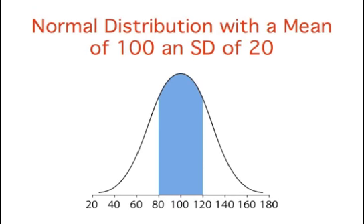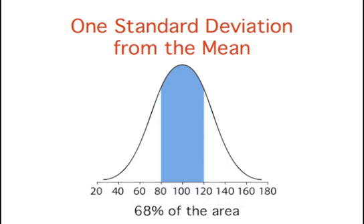Here you see a normal distribution with a mean of 100 and a standard deviation of 20. Again, 68% of the distribution is within one standard deviation of the mean.